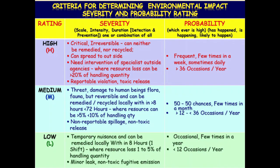This slide shows how the criteria is formulated for environment impacts to determine the severity and probability and to rank them as high, medium, and low. In the first column, the rating is given for severity and probability as high, medium, and low. In the middle column, the guidelines are given on how to assess the severity of the impact. In the last column, guidelines are given to assess the probability of the impact. We need to rate the impacts for severity and probability as shown in this slide, and plot against the criteria as given in the next slide, to determine the corresponding risk.